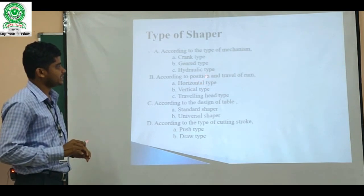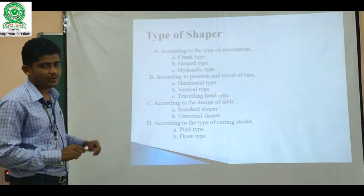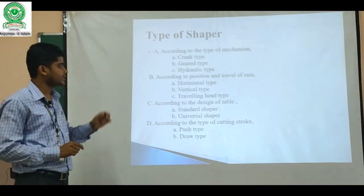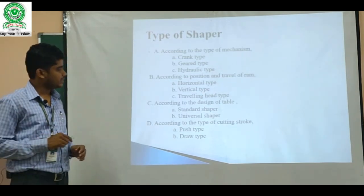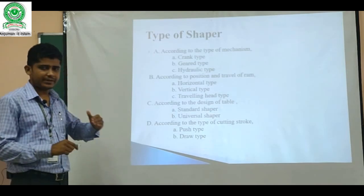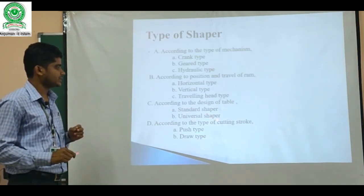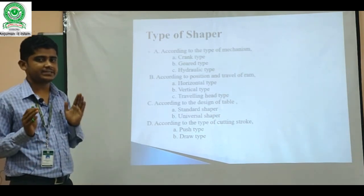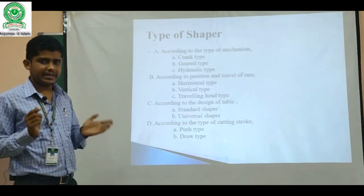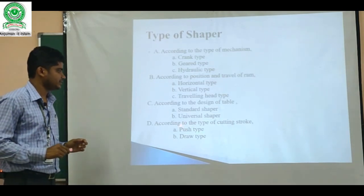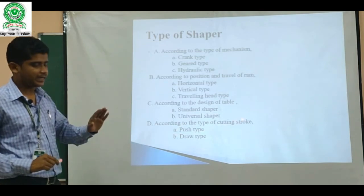On the basis of position and travel of the ram: when the ram travels on the horizontal axis, we have a horizontal type shaper machine. When the ram travels on the vertical axis, we have a vertical type shaper machine. We also have a travelling head type, where the single point cutting tool can be moved in different directions. According to the design of the table, we classify into standard shaper and universal shaper. In the universal shaper, we can accommodate workpieces from minimum to maximum size.